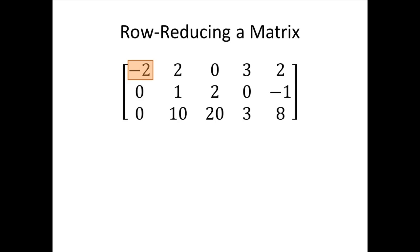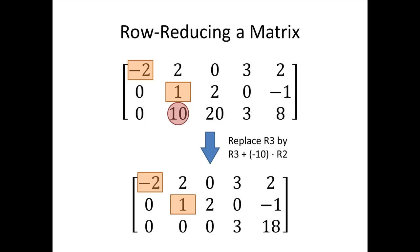The first column looks good — we've got our leading entry and zeros below it. The next row needs a pivot in the second column, and there's already a non-zero entry there, so we don't have to do any swapping. But we do need to replace — the ten below that pivot needs to become a zero. We use a replacement operation: replace row three by row three plus negative ten times row two. Multiplying row two by negative ten and adding to row three will cancel out the ten. Remember, we're not changing row two — only row three — giving us our new matrix.